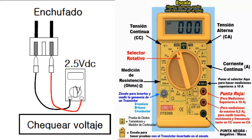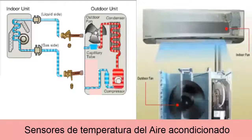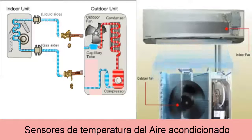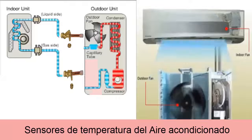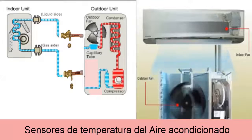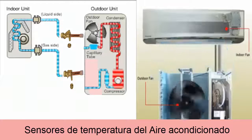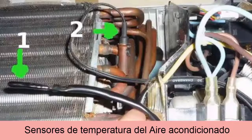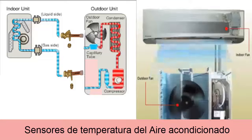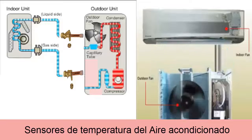These would be the steps to diagnose the sensors. When we talk about the types of sensors, we are going to find the local temperature sensor, which measures the temperature of the return air to average the temperature of the enclosure we are air conditioning. When there are problems with this sensor, you will mostly find the failure codes E4, E2, and E1.